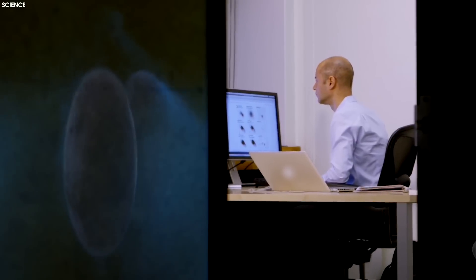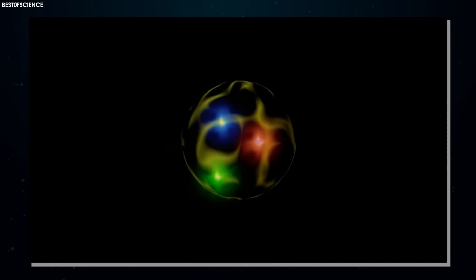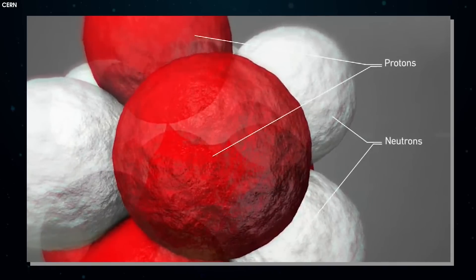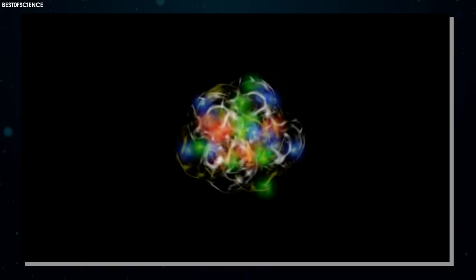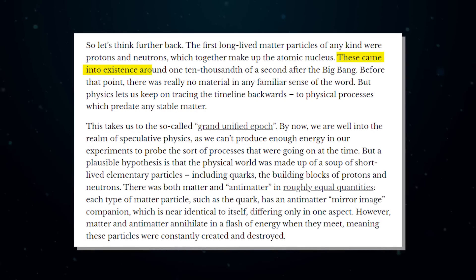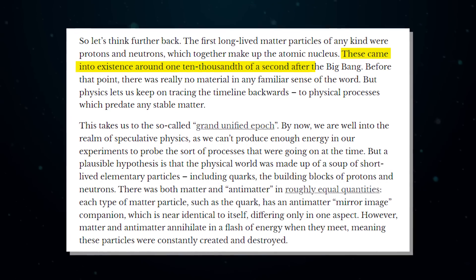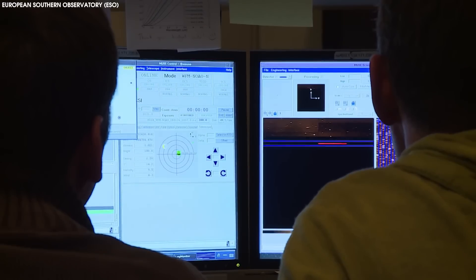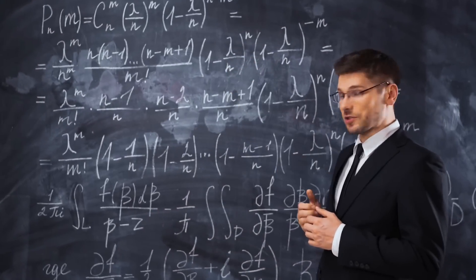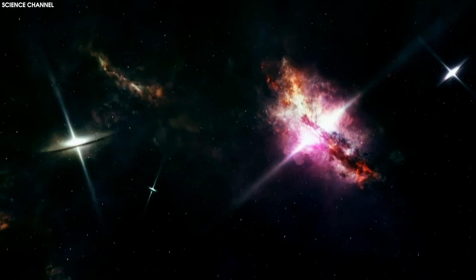So let's think further back. The first long-lived matter particles of any kind were protons and neutrons, which together make up the atomic nucleus. These came into existence around one ten-thousandth of a second after the Big Bang. Before that point, there was really no material in any familiar sense of the word. But physics lets us keep on tracing the timeline backwards to physical processes which predate any stable matter.